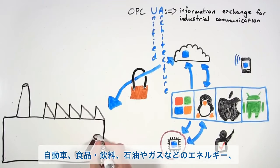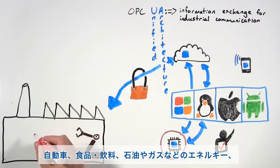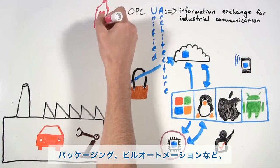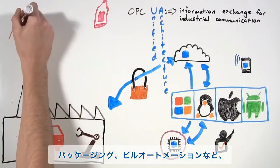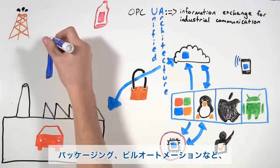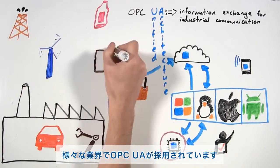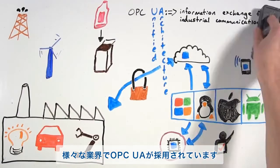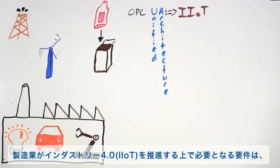Because of its flexibility, OPC UA has been widely adopted in industries like automotive, food and beverage, oil and gas, energy and utilities, packaging, building automation, and so on.